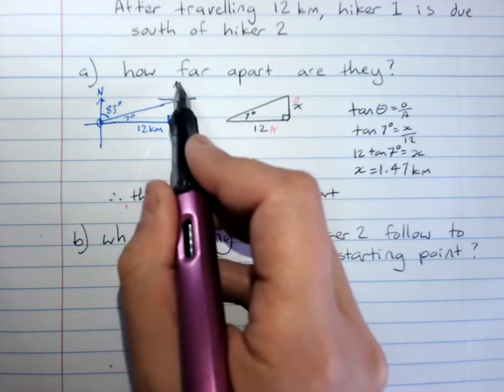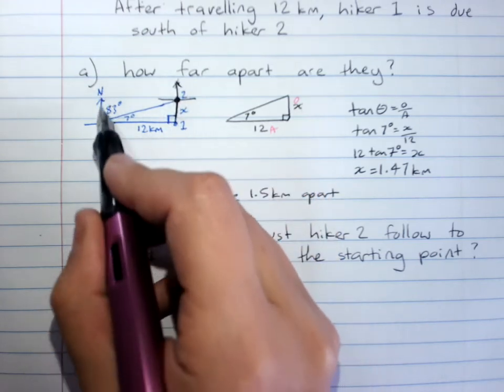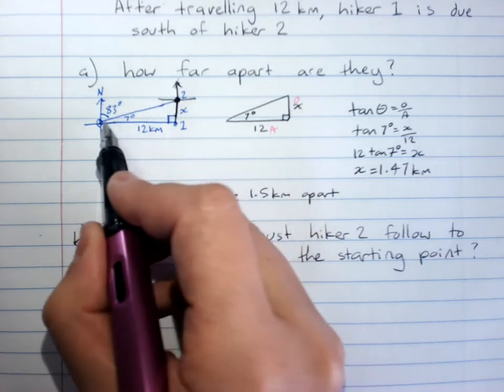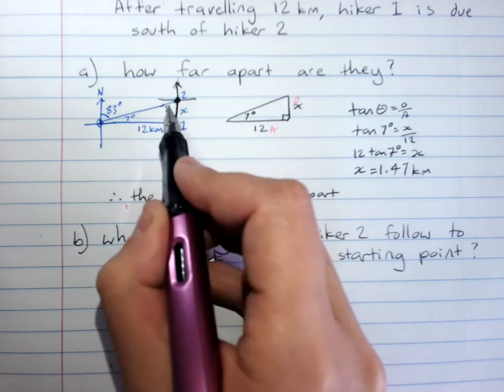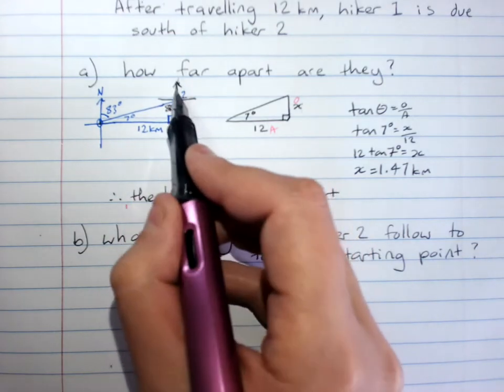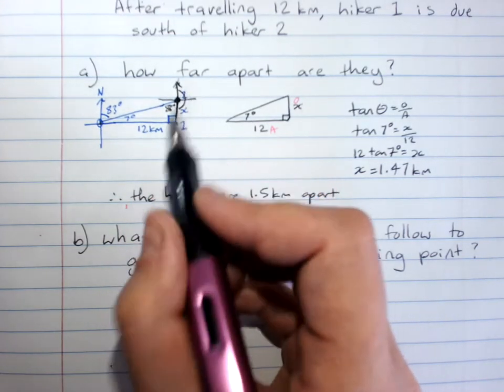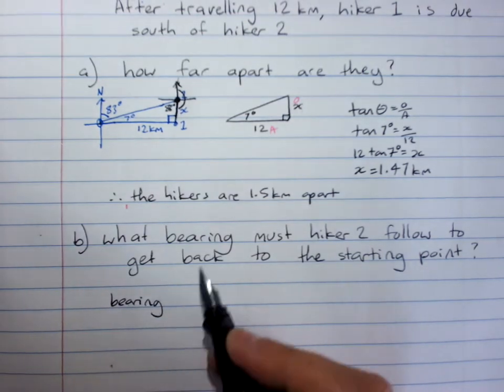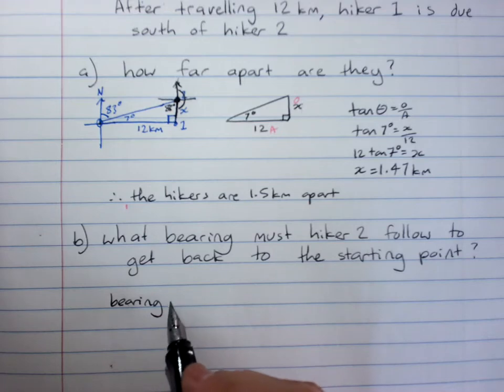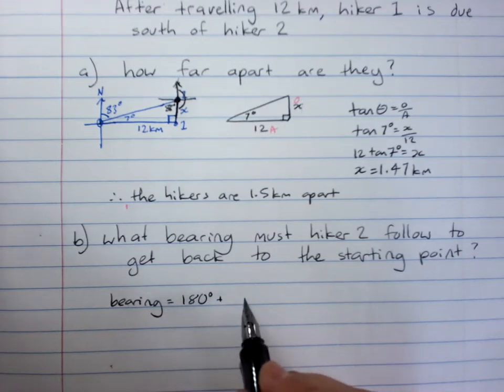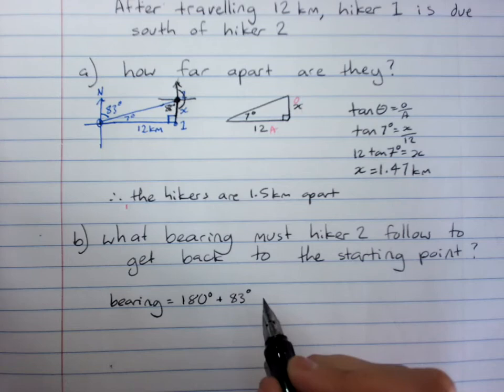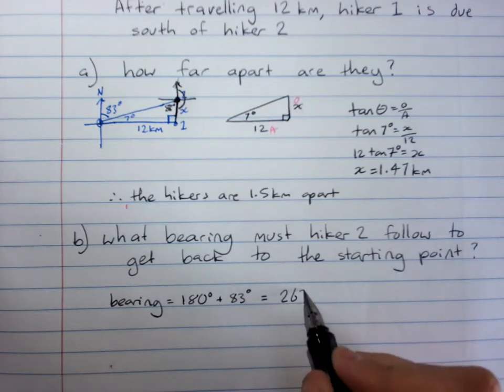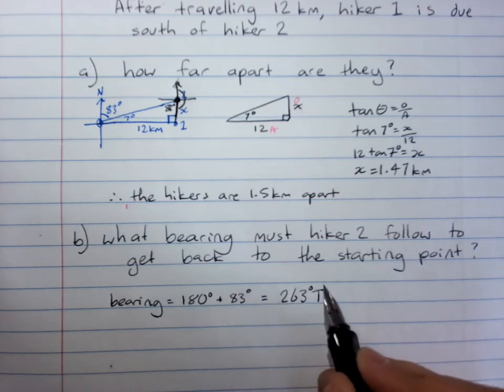Because these are parallel lines, our north-south lines, and this is a transversal, we know this is 83 degrees, and that's 180. So our bearing will be 180 degrees plus 83 degrees, 263 degrees true.